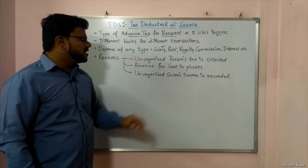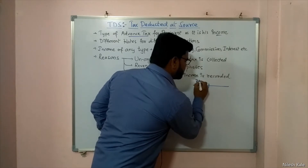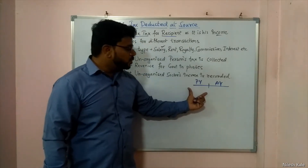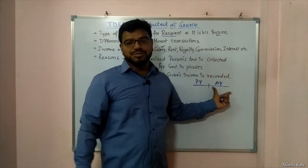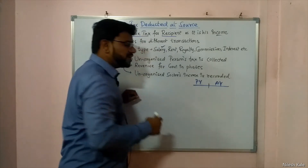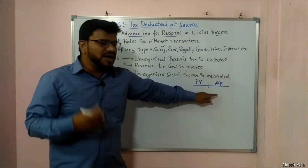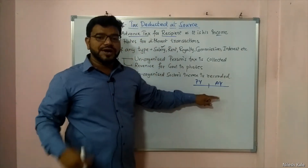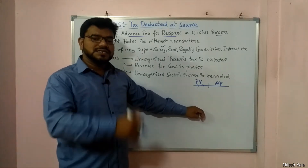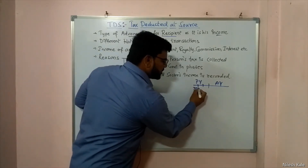One more concept is revenue for the government in phases. Government will say: why should I wait for your taxes till next year? This is your previous year and this is your assessment year. If you have income in the previous year, you make the payment in the assessment year. Government says: why don't you pay in phases? Why don't you pay advance tax? That is why government introduces the concept of TDS and TCS.